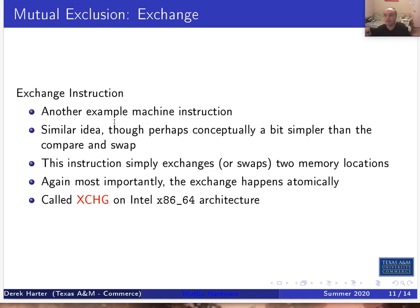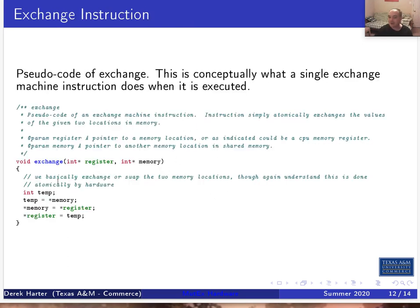Another example of a machine instruction — I'll go through this one quickly. It's a similar idea, although conceptually simpler: it's really just a swap or an exchange. The Intel architecture has both compare exchange and straightforward exchange, which just exchanges two values. The C pseudocode: you give two memory locations, or typically one is a register — so you might want to exchange the value of a register with a memory location. Whatever was in memory ends up in the register, and whatever was in the register gets put into memory. It's simply swapping those two values.